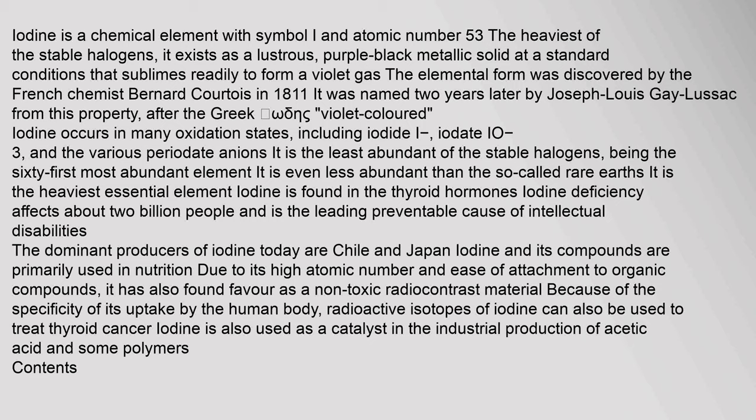Iodine occurs in many oxidation states, including iodide I⁻, iodate IO₃⁻, and the various periodate anions. It is the least abundant of the stable halogens, being the 61st most abundant element — even less abundant than the so-called rare earths. It is the heaviest essential element; iodine is found in the thyroid hormones.